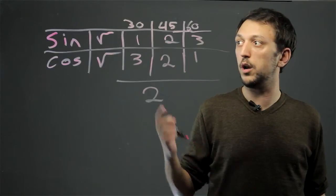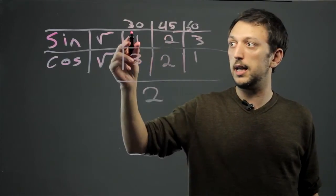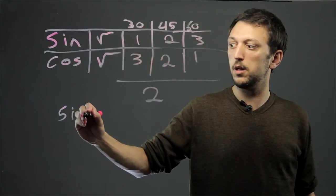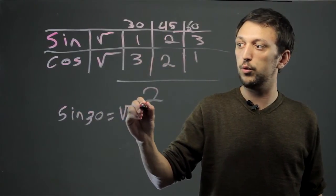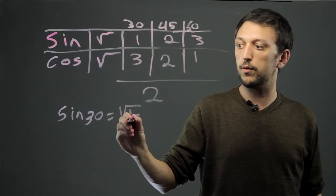So, for example, if you want to know the sine of angle 30, it's sine 30 equals root 1 over 2.